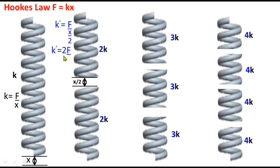So k' prime becomes 2F divided by x. And what is this F by x? This is k. So we replace this with k. And here we are with the value 2k.